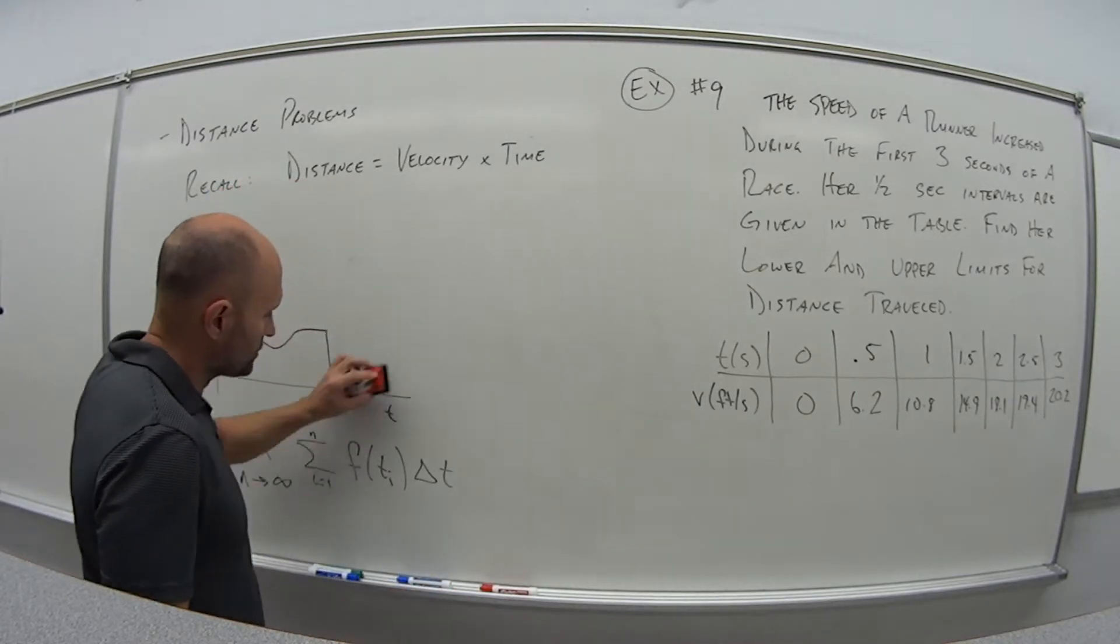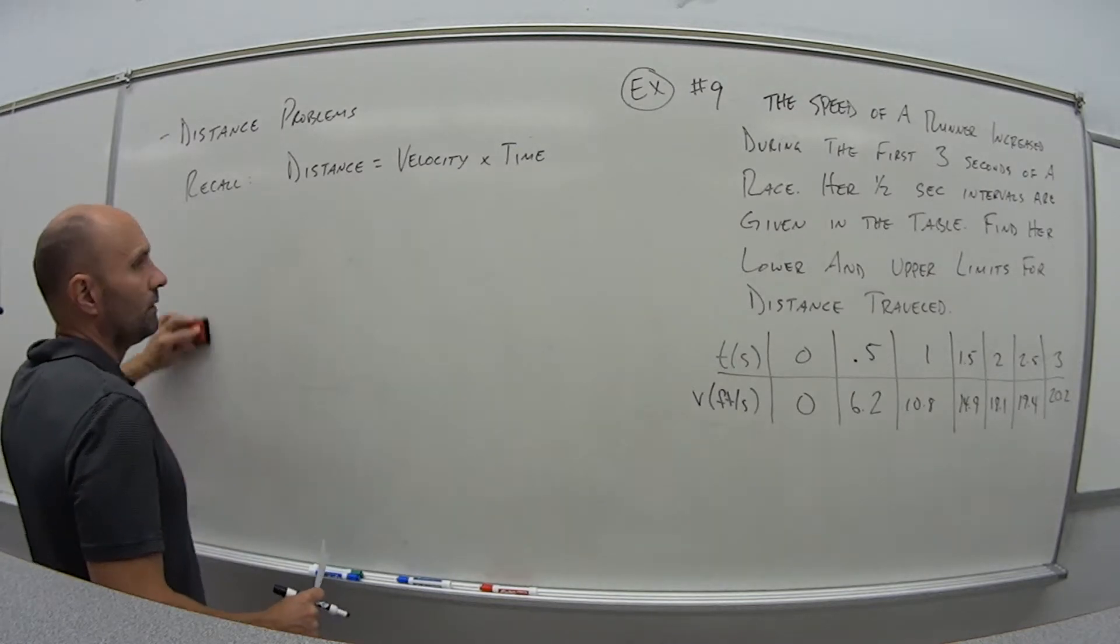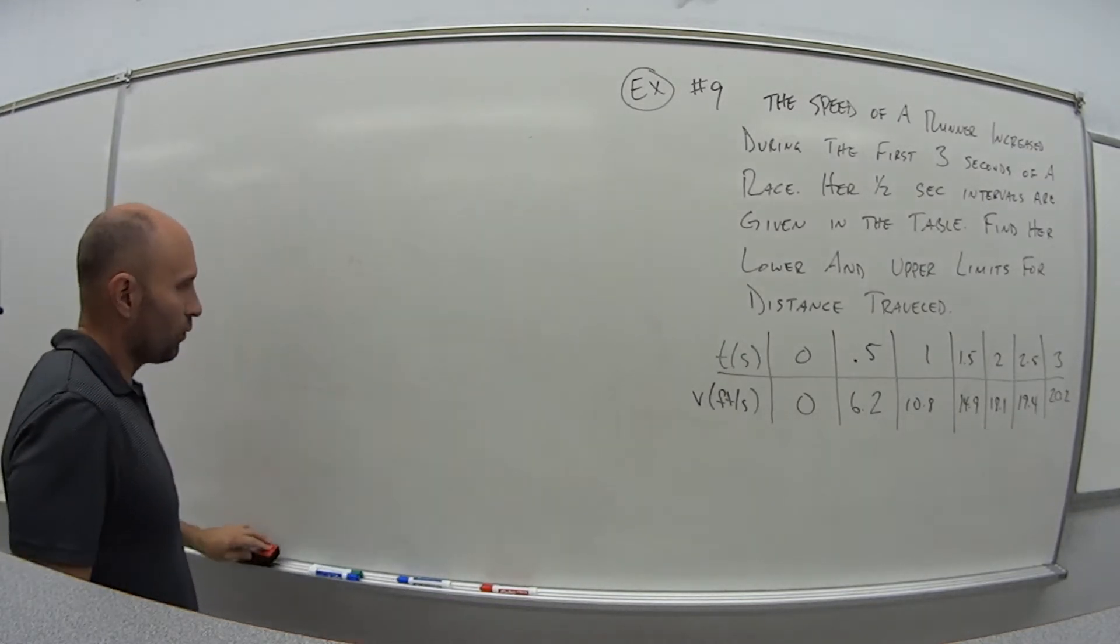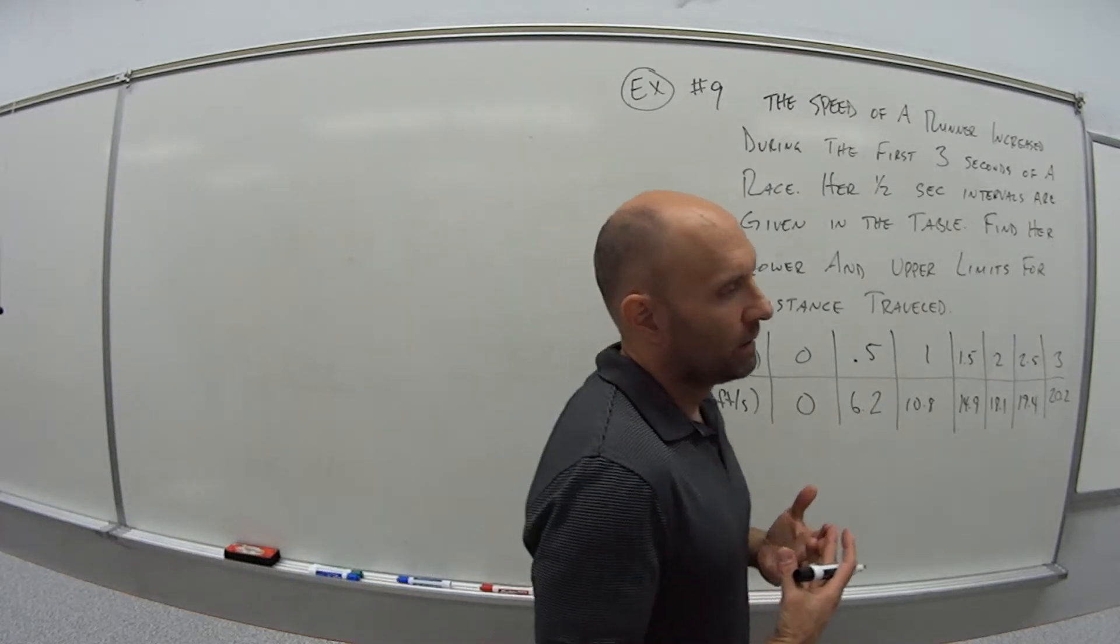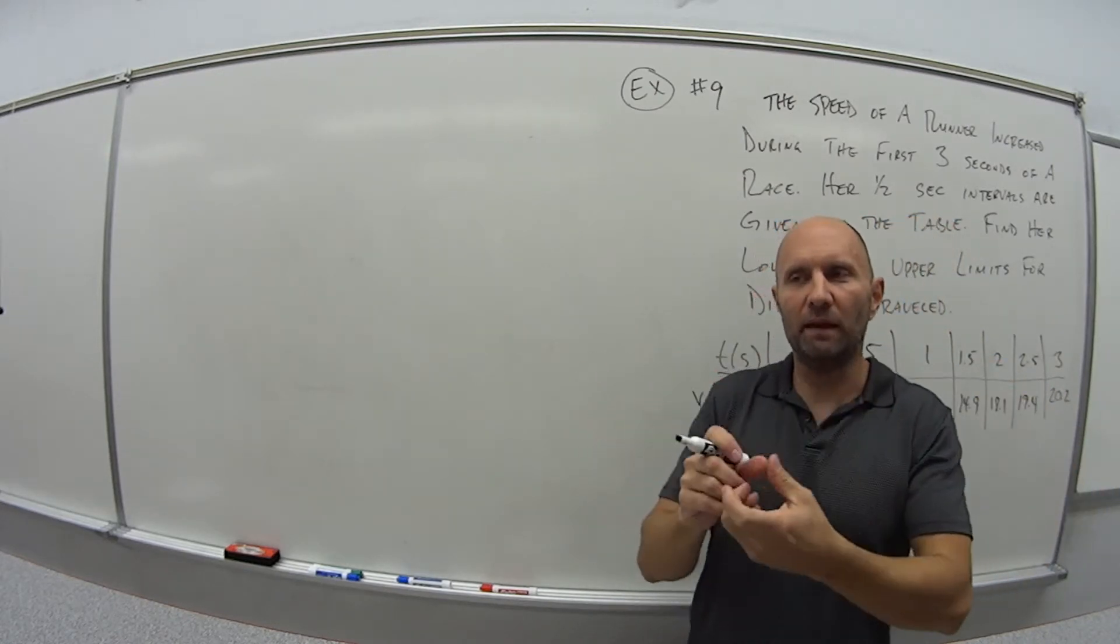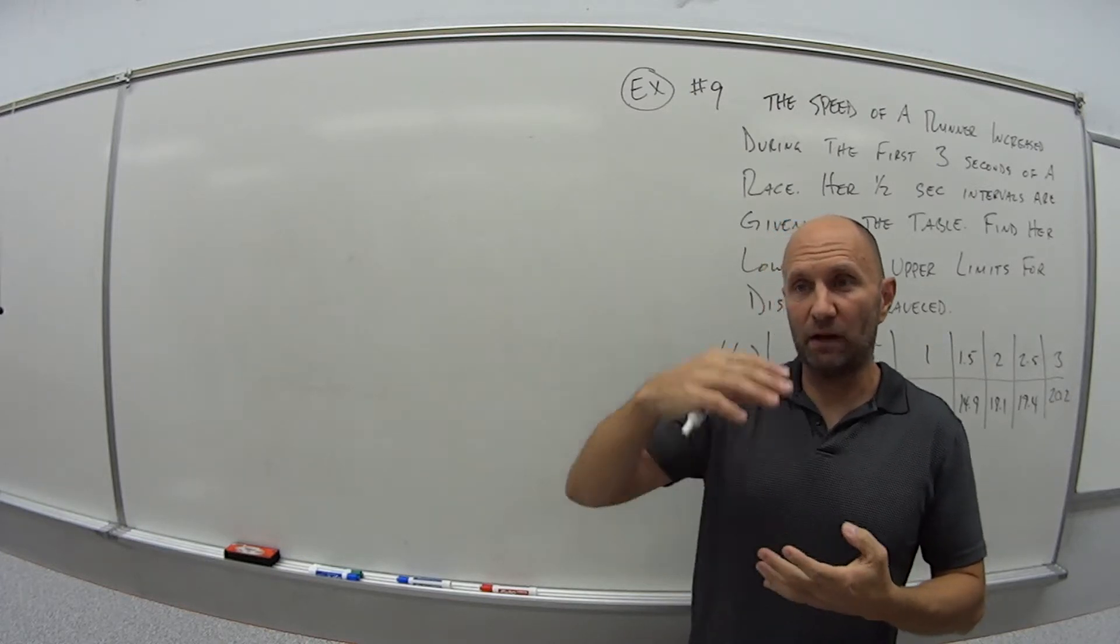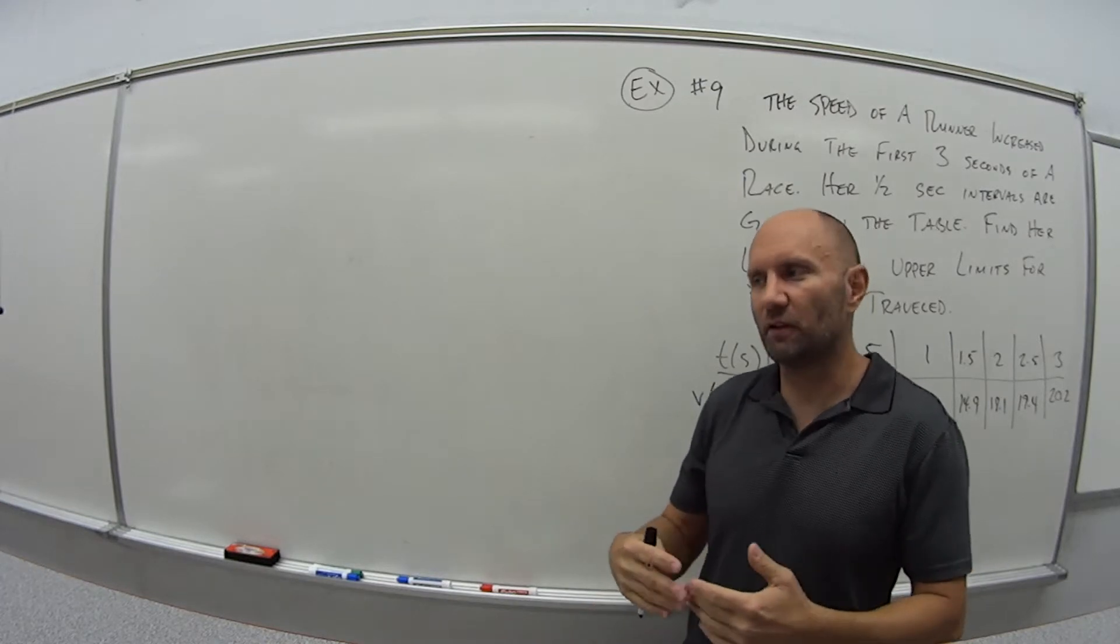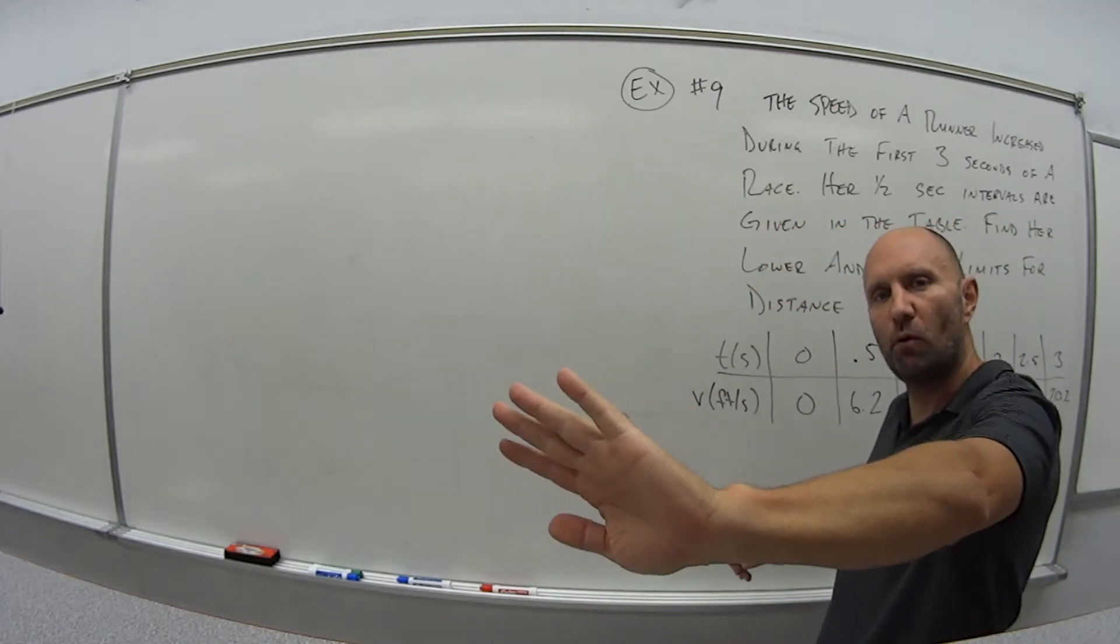So what this question is asking for, it says lower and upper limits. So what that means is if you think back to video one, when I drew the parabola, depending if we use the left end point or the right end point, we had what? We either had too much area or not enough area.